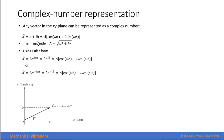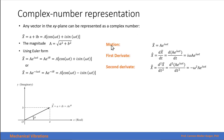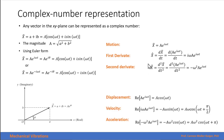If we express the motion of a system using Euler form, we obtain expressions for the motion, its first derivative, and its second derivative. The displacement is the real part of the expression of motion, the velocity is the real part of the first derivative, and the acceleration is the real part of the second derivative. These expressions are consistent with those we already analyzed.